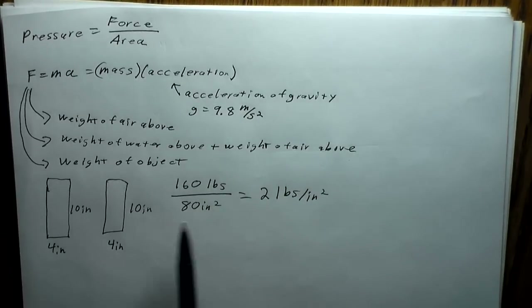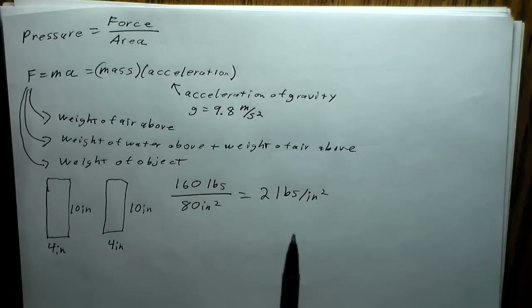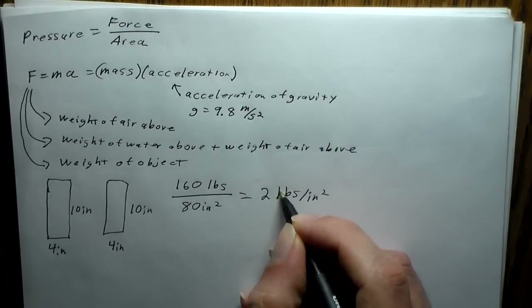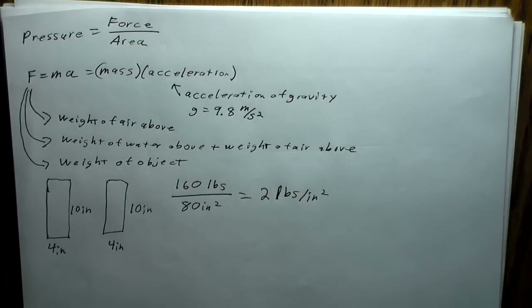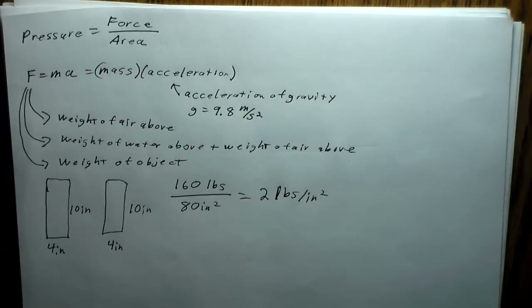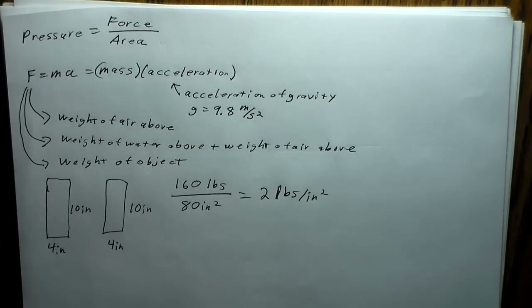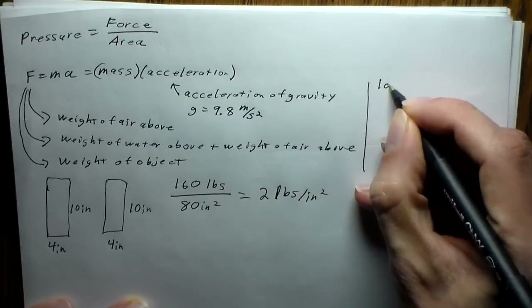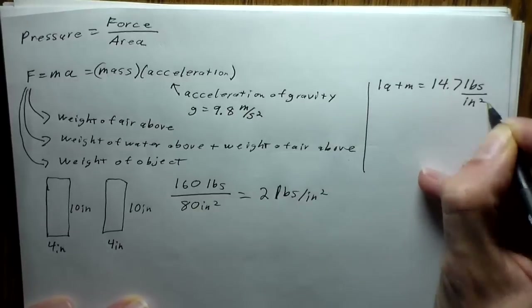If you're a 160-pound person wearing shoes about that size, you're exerting 2 pounds per square inch on the ground. You may have heard of PSI — pounds per square inch. One atmosphere is 14.7 pounds per square inch, which is one of our unit conversions.